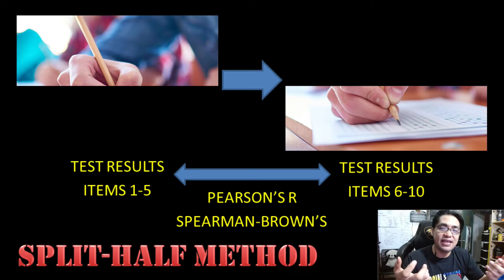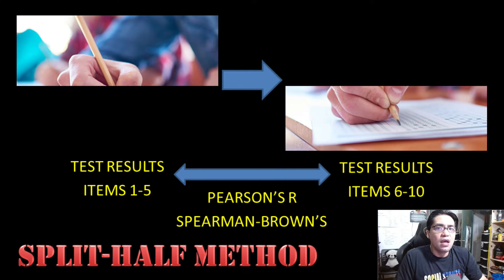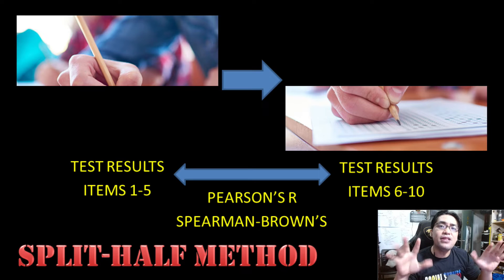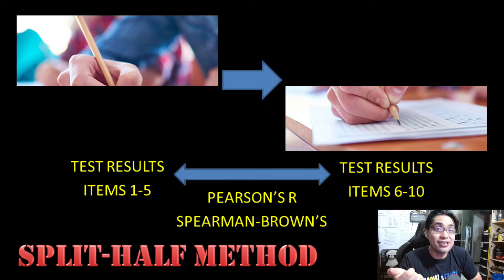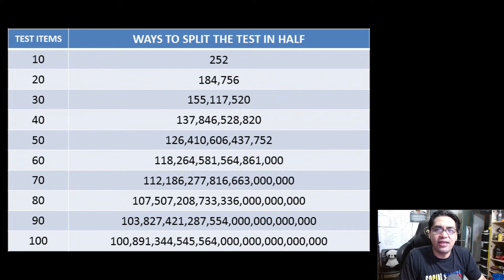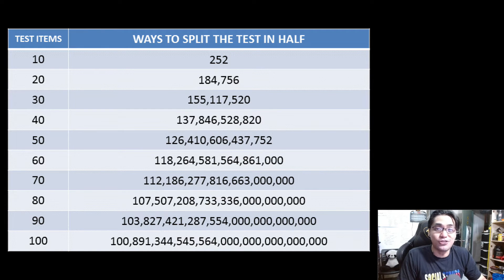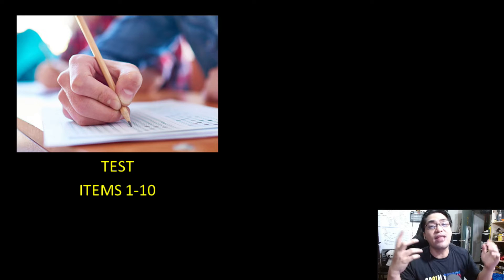This method is commonly known as the split-half method. However, it has a flaw: how do you split the test in half? If you attempt to split a 10-item test into two 5-item tests, there are 252 possible ways to do so, and each way yields different correlation results. If you attempt to split a 20-item test, there are more than 184,000 possible ways. A 30-item test has more than 155 billion ways. So which possible way yields the most accurate result?